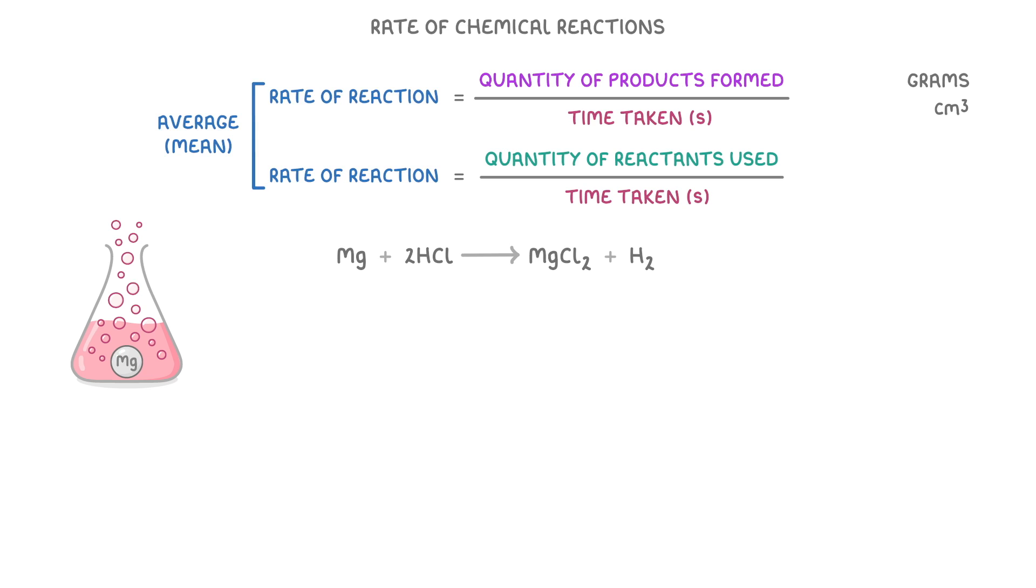We can actually see how this works by plotting some graphs, with time on the x-axis, and either mass of reactant remaining, or volume of product produced on the y-axis.